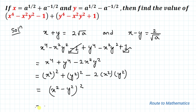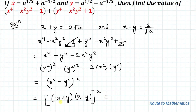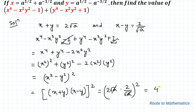Applying the algebraic identity a² − b² = (a+b)(a−b), we get (x² − y²)² = [(x+y)(x−y)]². Substituting our values, this equals (2√a × 2/√a)². The √a terms cancel out, giving us 4², which equals 16. Thus the answer to the given expression is 16. I hope you understood the solution. Thanks for watching — please subscribe to my channel and hit the like button for more such interesting questions.